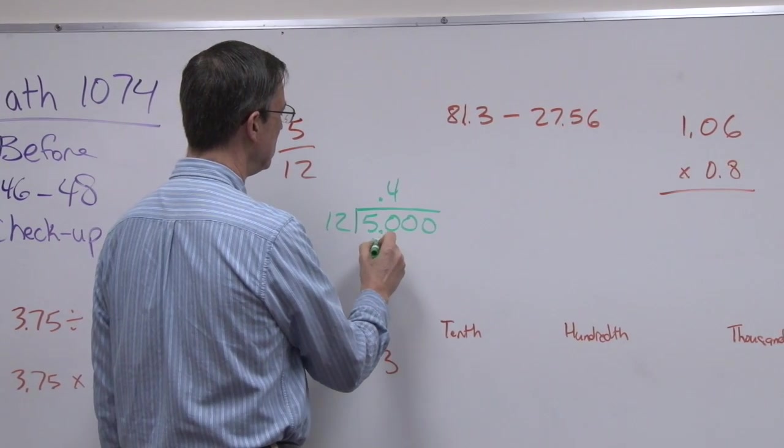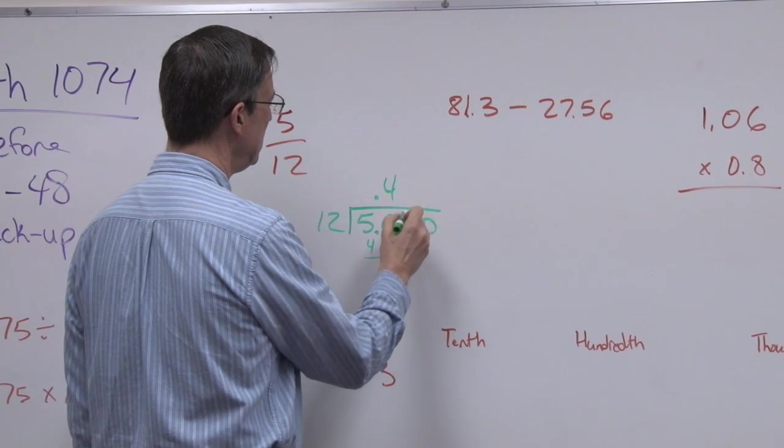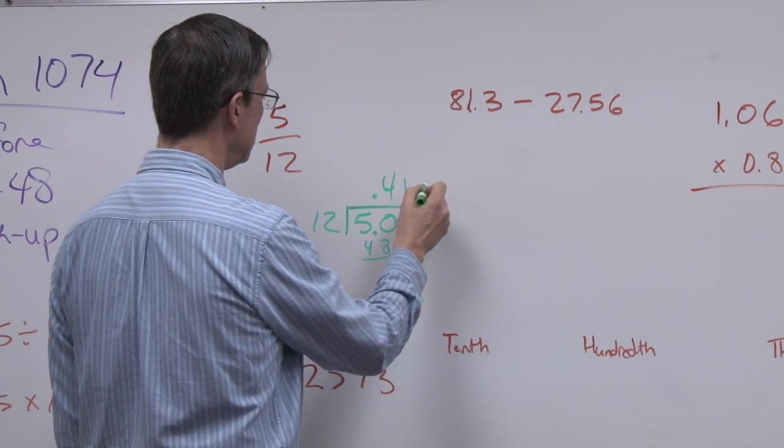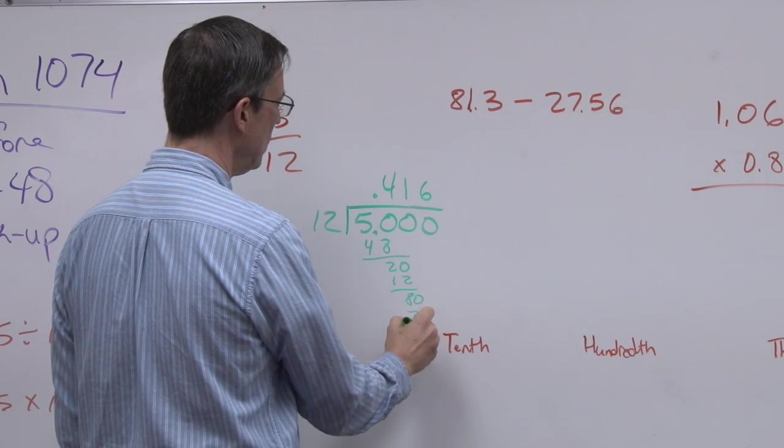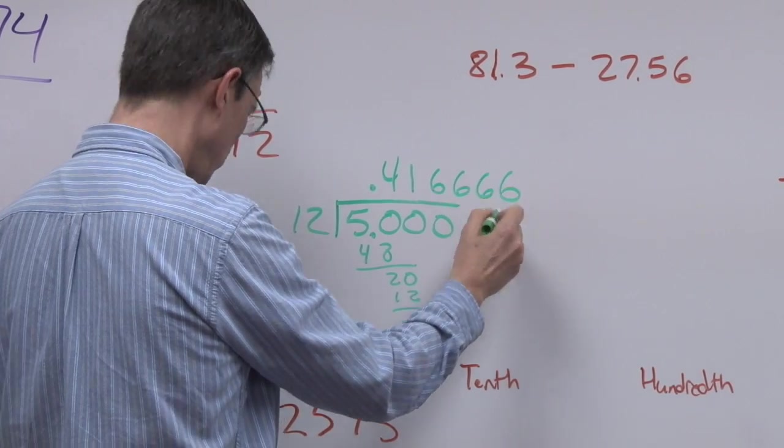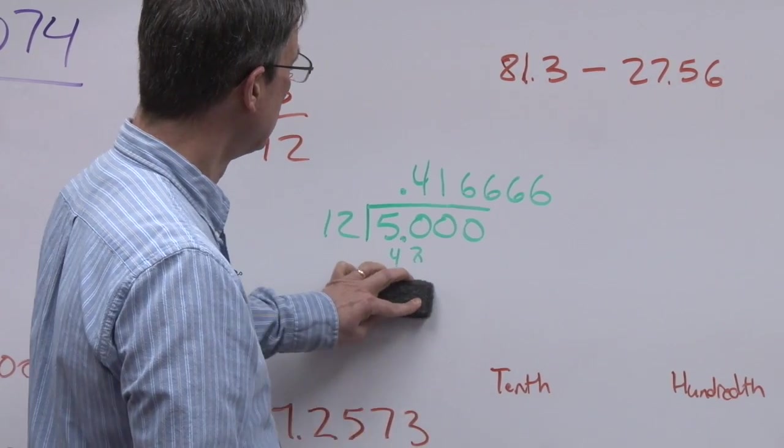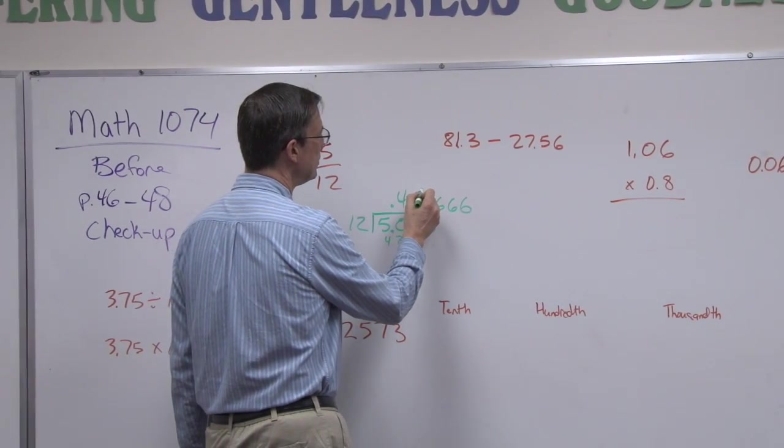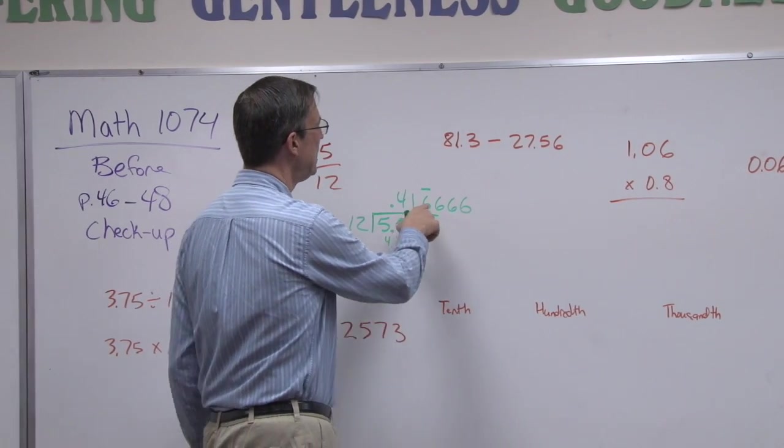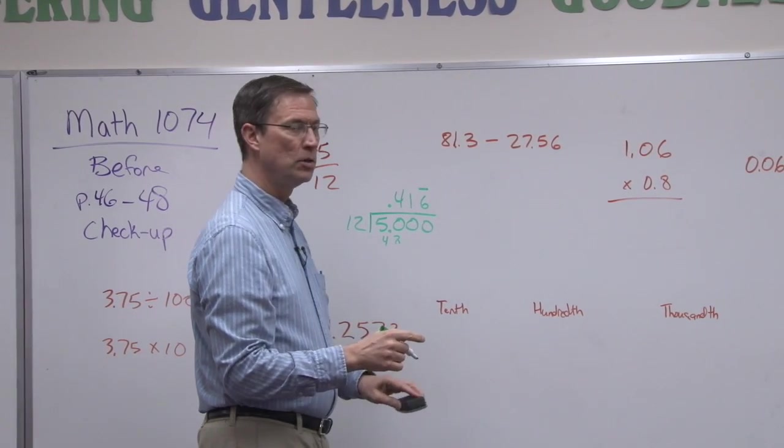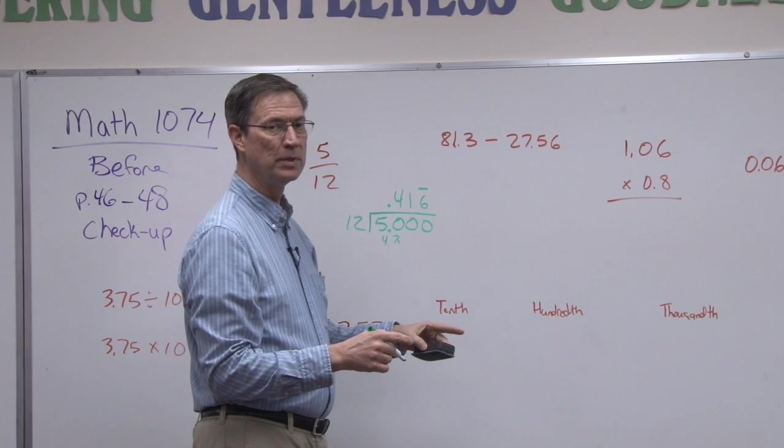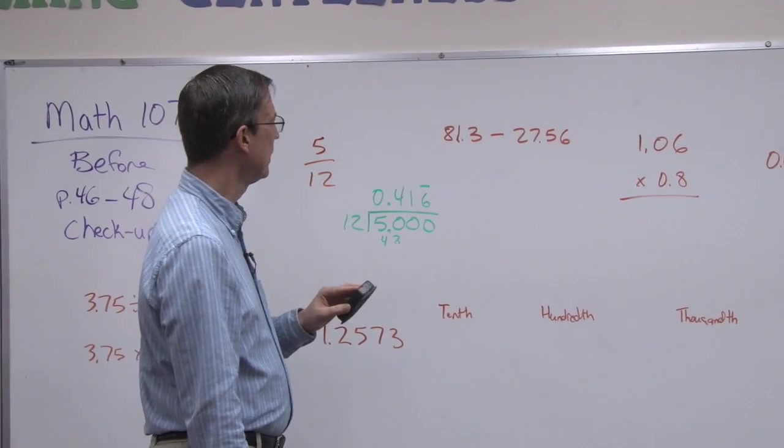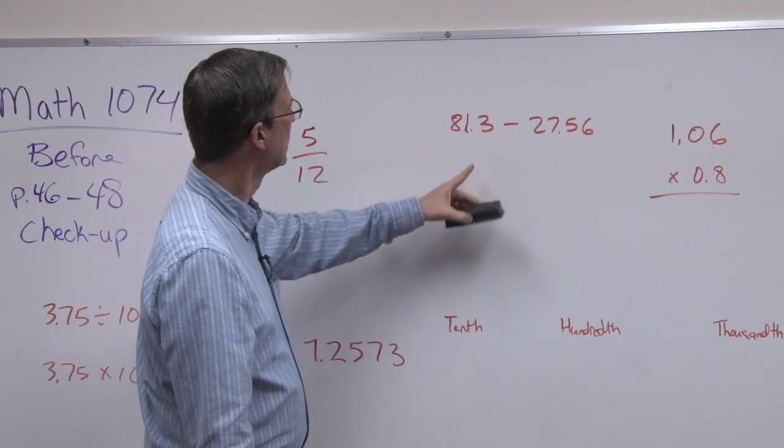We're dividing by 12. Notice I bring the decimal straight up in the answer, and then we put these zeros here. 12 will go into that 4 times, which is 48. Subtract, get 20. That'll go once. Bring down an 8, get 6. That would be 72, and that's going to give me another 8, which is going to be another 6, and another 6, and another 6. We could just keep going. This is called a repeating pattern. So we put a bar over the digit that's repeating, and we can get rid of the rest. The 6 is the repeating digit. Don't put it over the whole thing, just the 6.